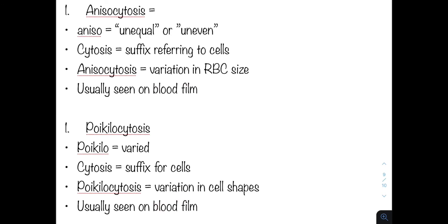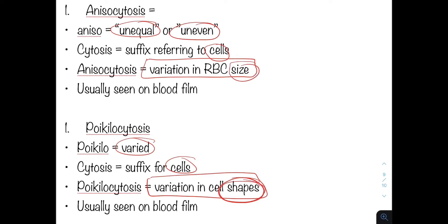Anisocytosis means unequal or uneven cells, so it is a variation in the red cell size. Poikilocytosis is variation in the cell shape. So anisocytosis looks at the size whereas poikilocytosis looks at the shape. These two usually exist together. Again, these are both seen on blood film.